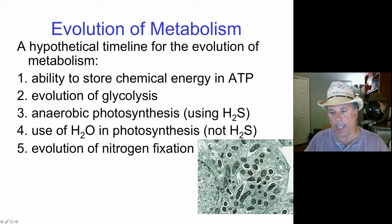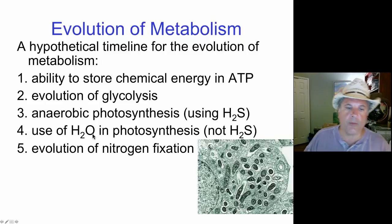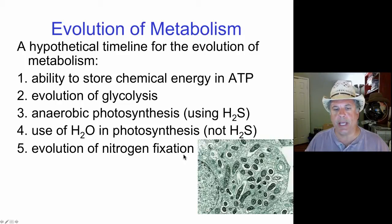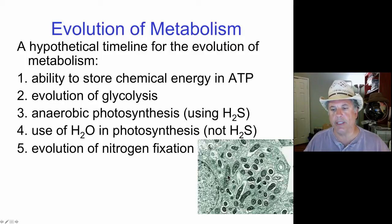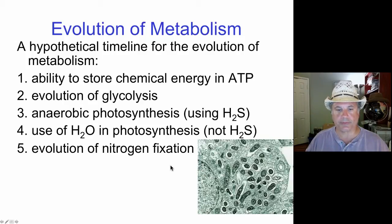The evolution of nitrogen fixation had to occur before oxygen produced by oxygenic photosynthetic organisms greatly increased in the atmosphere, because oxygen is toxic to the biochemistry of nitrogen fixation. Today we see nitrogen-fixing organisms only in oxygen-free environments, or alternatively the rhizobia have compartments within them that are oxygen-free for nitrogen fixation. These bacteria live symbiotically with plants that can't fix their own nitrogen, greatly enhancing the plants' ability to reproduce by providing nitrogen in nitrogen-poor environments.